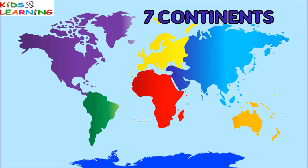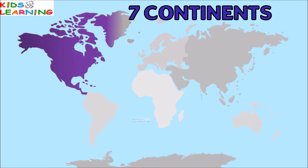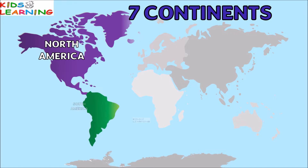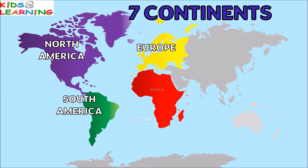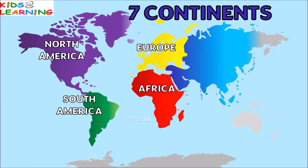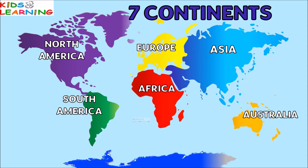There are 7 continents. This is North America. This is South America. This is Europe. This is Africa. This is Asia. This is Australia. And this is Antarctica.